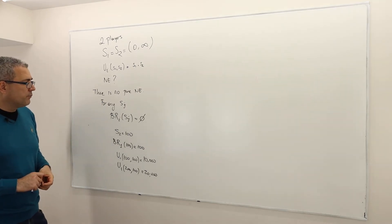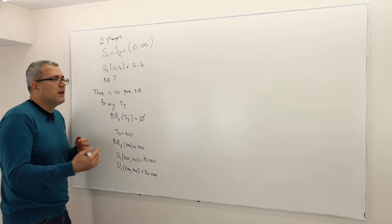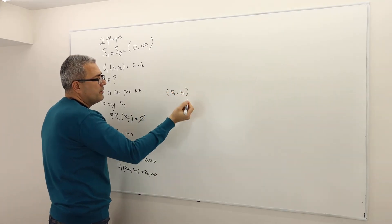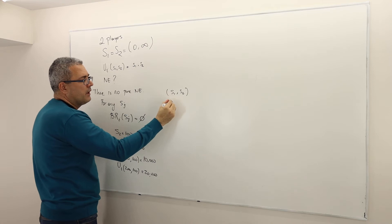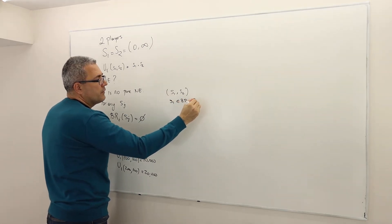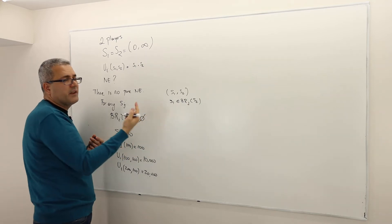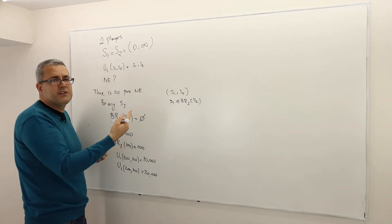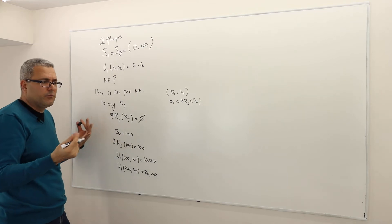Because of this, remember the Nash equilibrium says strategy profile (S1, S2) is a Nash equilibrium if S1 is a best response to S2. But the best response for player one is an empty set, so therefore no strategy is going to be a best response, and hence there can't be any Nash equilibrium.